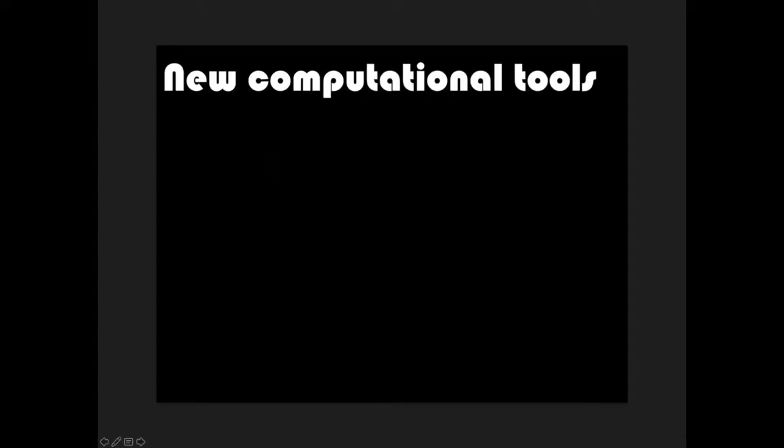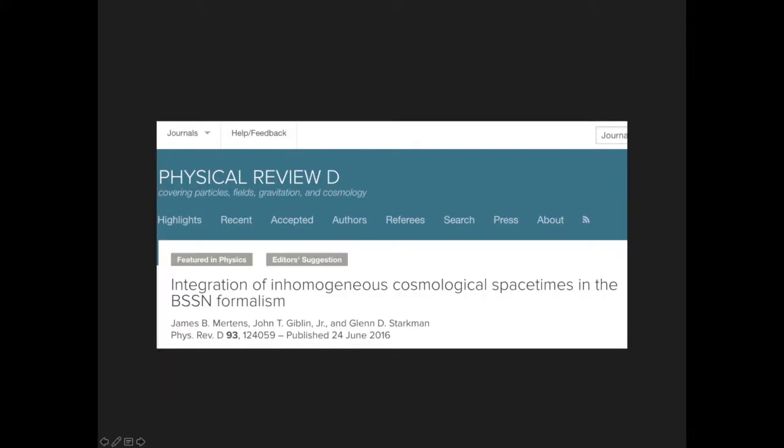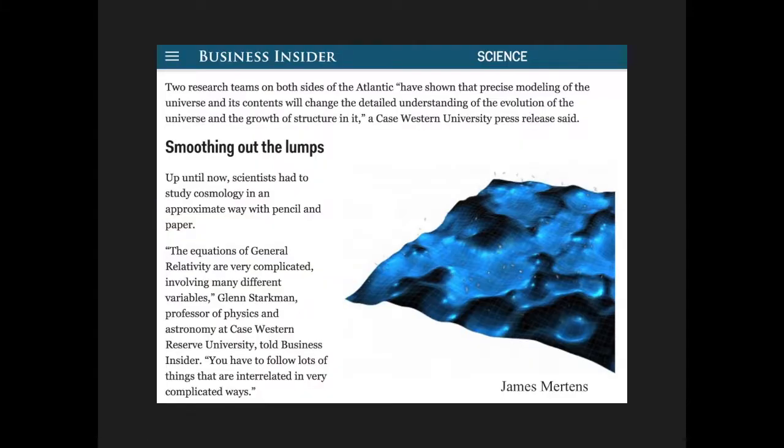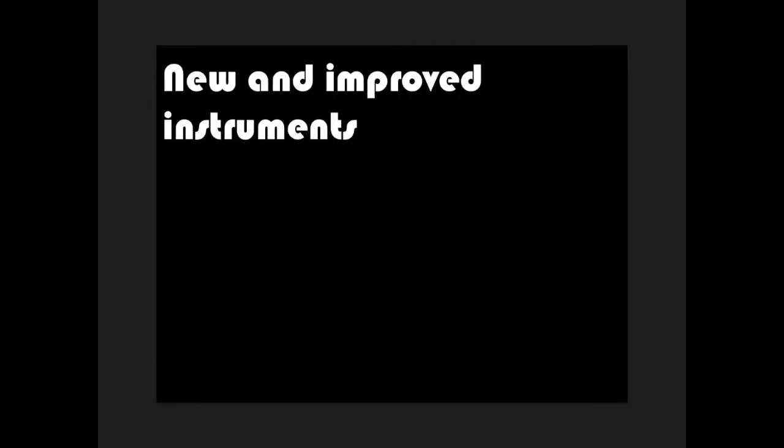The good news is we can make predictions from our models and we can make measurements to test those predictions. So for example, our group here has been developing new computational tools, one called Cosmograph, to allow us to use the full power of Einstein's theory of general relativity to follow the evolution of the universe and of structure in the universe. Or as Business Insider said, we're following how general relativity allows us to understand the very complicated equations to follow the evolution of cosmic structure.